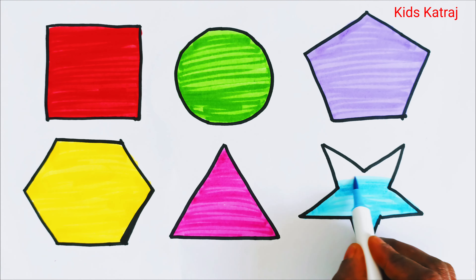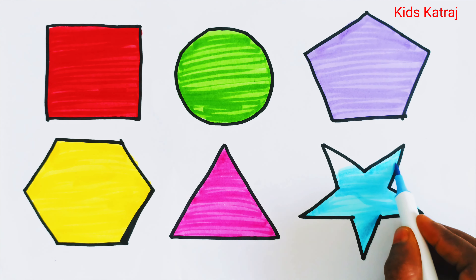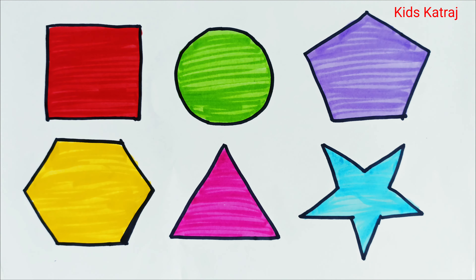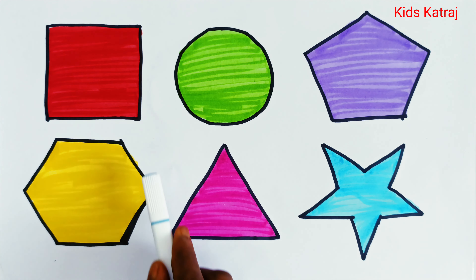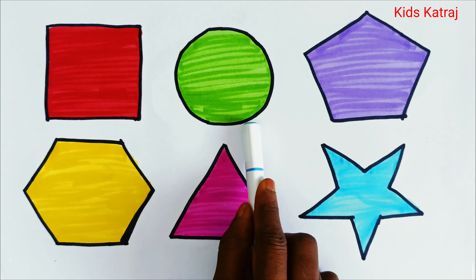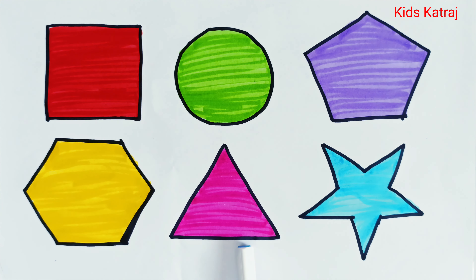Let's define once again: square, circle, pentagon, hexagon, triangle, star. Thank you kids, bye-bye, see you in the next video.